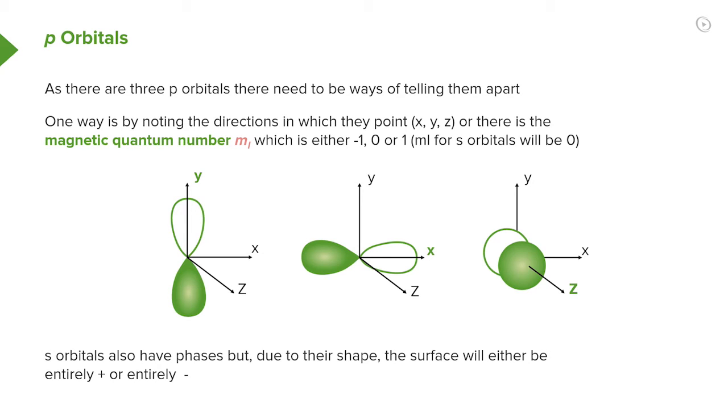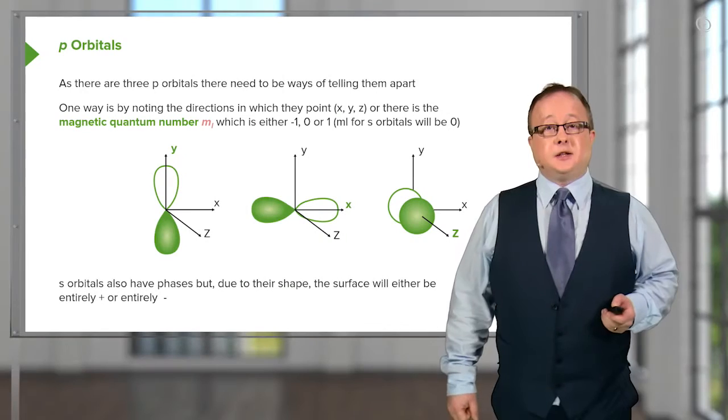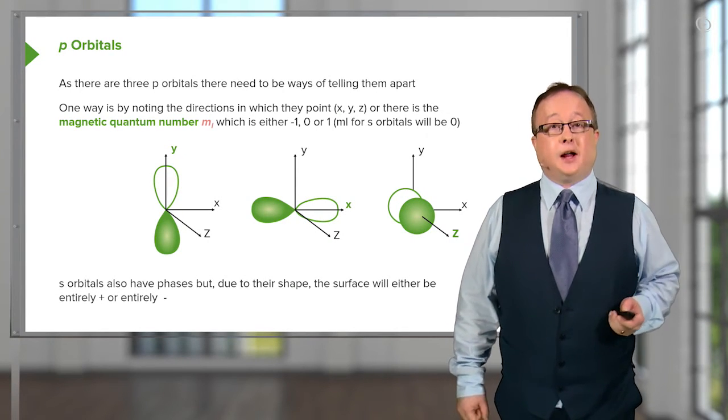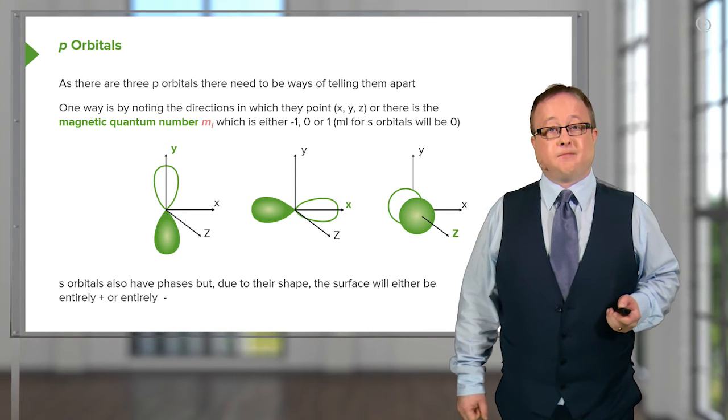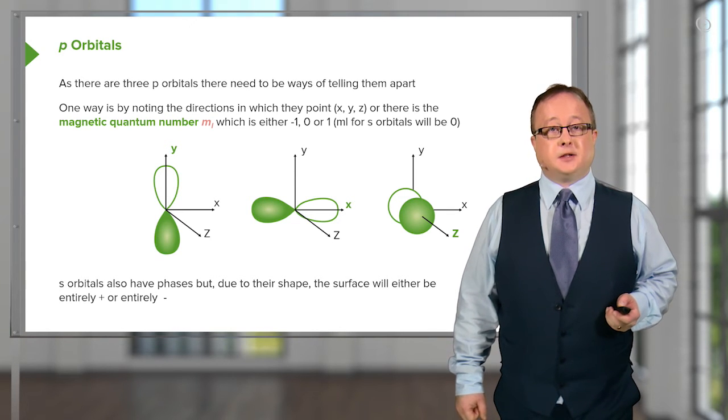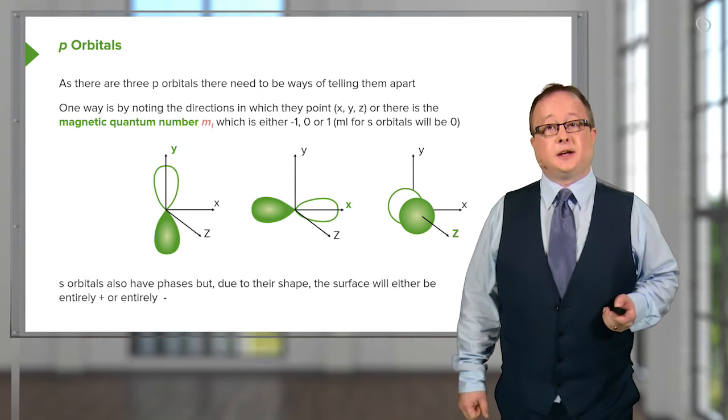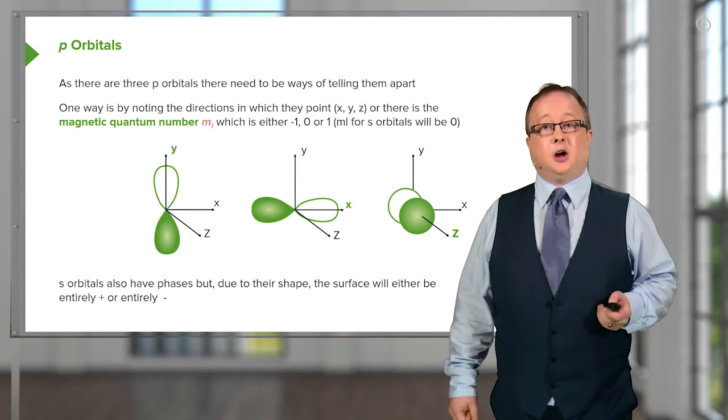And so, a way of defining an electron in a given p orbital is via the magnetic quantum number, or ML. Not to be confused with MS. That is a different one which we will come onto later. So, this helps us to define the direction of an orbital as well as its type. Here we can see the orbital running along the y-axis, then across the x-axis, and then finally along the z-axis.